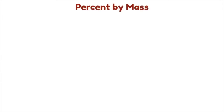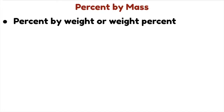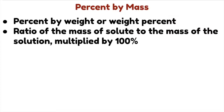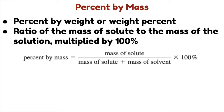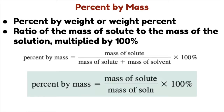Let's start with percent by mass, also called percent by weight or weight percent. It is the ratio of the mass of solute to the mass of solution multiplied by 100%. The formula is: percent by mass equals mass of solute over the mass of solute plus the mass of the solvent, times 100 — because solute plus solvent equals solution. Or simply, mass of solute over mass of solution times 100. Remember that percent by mass is unitless because it is a ratio of two similar quantities; the grams cancel out.